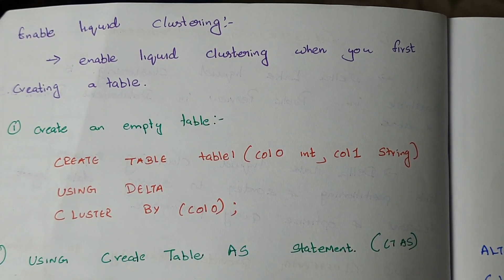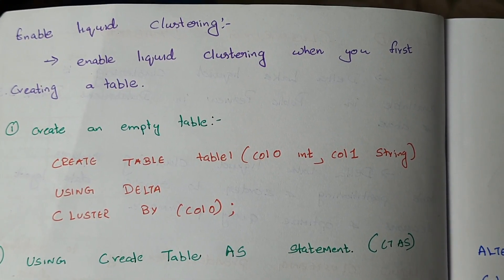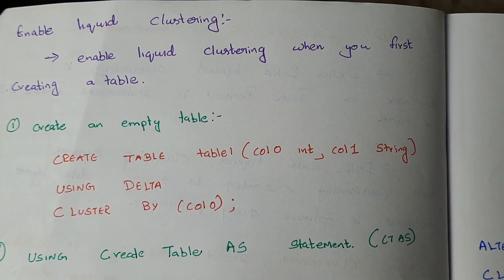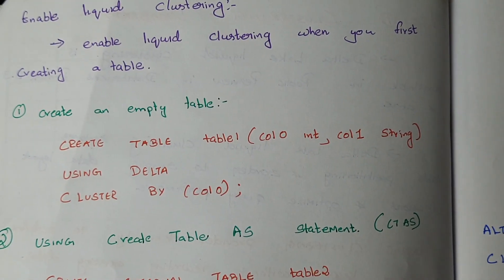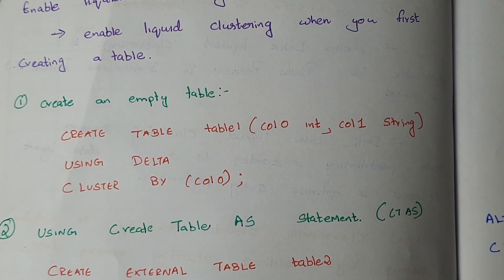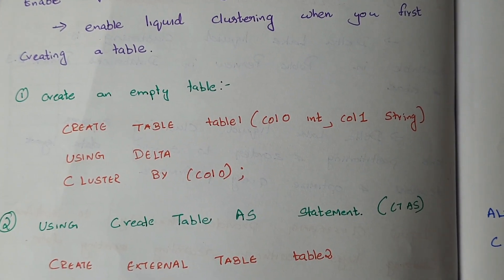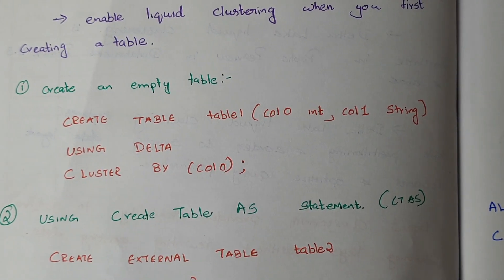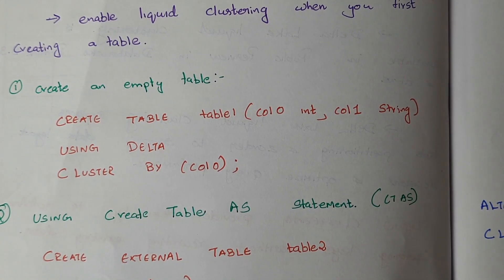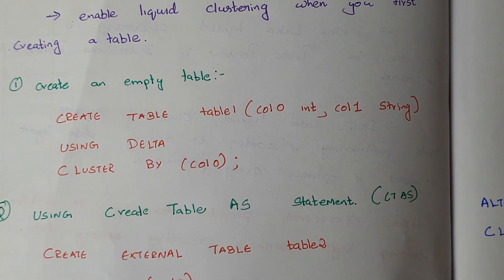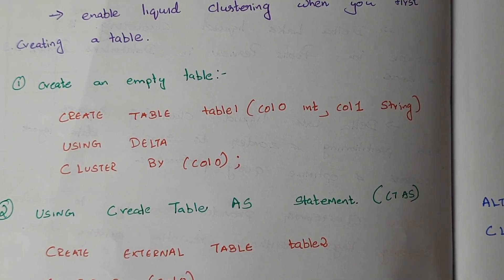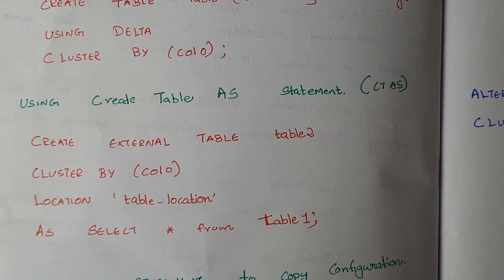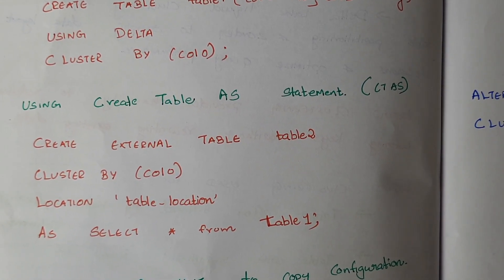Now let's see how to enable liquid clustering. You can enable it when first creating a table. To create an empty liquid clustering table, use: CREATE TABLE table_name with the required columns, USING DELTA, then CLUSTER BY the chosen column — instead of PARTITION BY. You can also use a CTAS (Create Table As Select) statement: CREATE TABLE table_name CLUSTER BY column, specify a LOCATION for external tables, and then AS SELECT * FROM the source table.